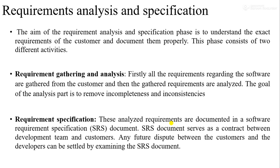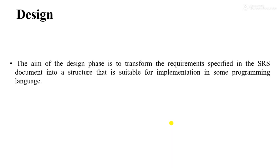The next phase is design. The aim of the design phase is to transform the requirements specified in the SRS document into a structure that is suitable for implementation in some programming language. The main aim of design is to prepare a blueprint for the entire system, which can then be converted into source code. We usually perform two types of design: high-level design and low-level design. We have a separate chapter for design where we will learn different types of design issues and design models in detail. For now, consider that the design phase is where we build the blueprint of the entire system.